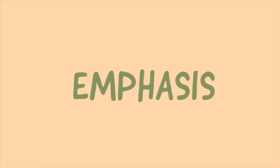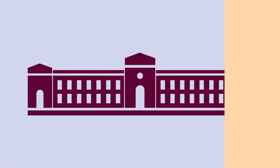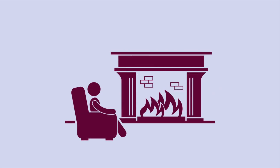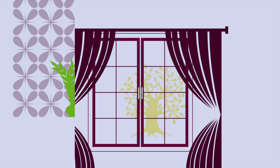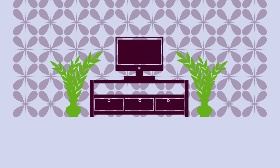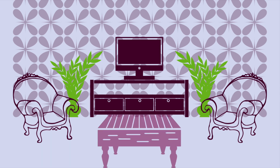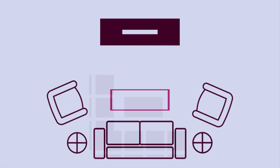The fourth principle is Emphasis. Architectural spaces often have points of interest such as a fireplace or a window with a beautiful view. For interiors, you can choose to enhance the built-in focal point by arranging furniture around it to emphasize it. In a room that lacks such a built-in point of interest, you can create one through groupings of furniture or using an unusual or large piece.